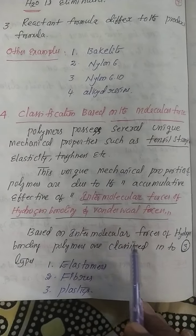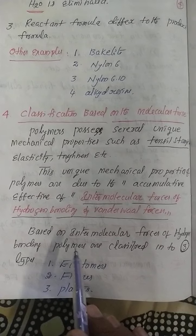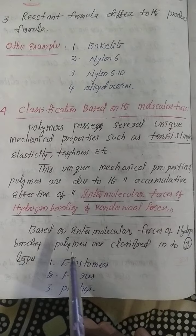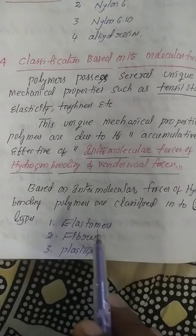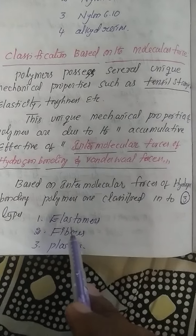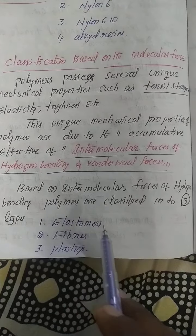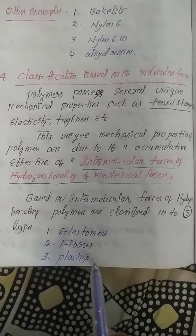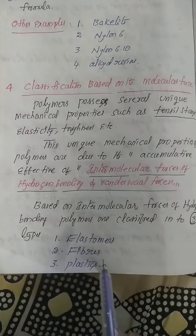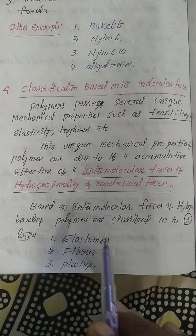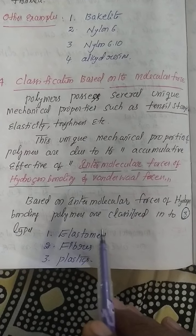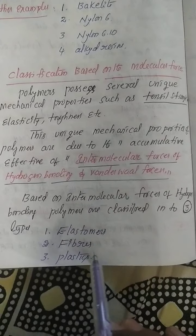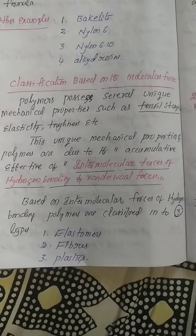Based on the intermolecular forces of hydrogen bonds, the entire polymers are classified into three categories. Number one is elastomers, number two is fibrous, and number three is plastic. Based on the intermolecular forces of hydrogen bonds, the polymers can be classified into these three categories, which will now be explained one by one with examples.